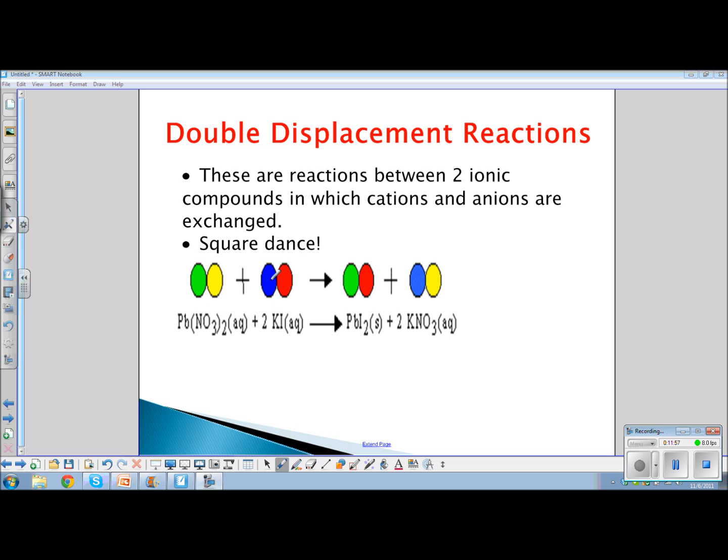There was just a double displacement reaction. And these reactions are characterized by the fact that these reactions are between two ionic compounds. So we've got an ionic compound here and an ionic compound here. And what happens is that they actually exchange partners. It's like square dancing. You know how they go. Change your partners. Two to the left. Two to the right. You know how that goes.